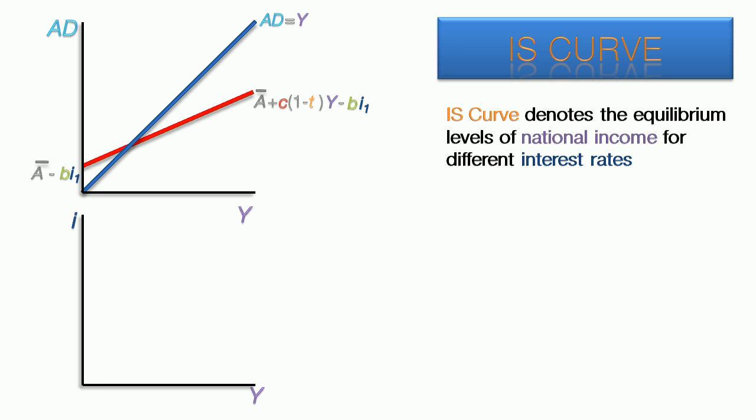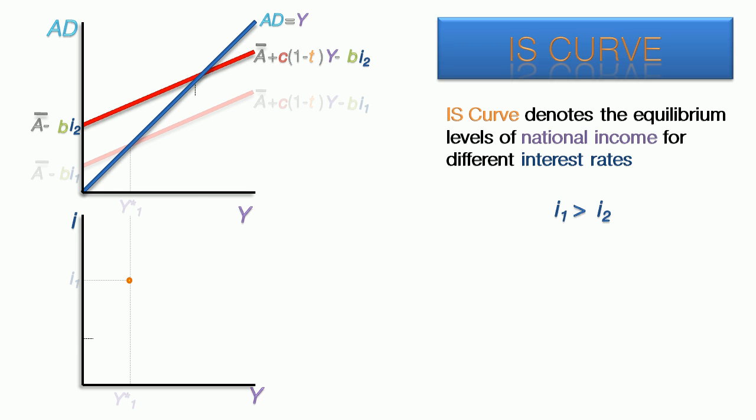Here is the curve for interest rate number 1. The equilibrium level of income is the same for both graphs. When we put interest rate number 1 on our bottom graph, we have the first point in our IS curve. The second aggregate demand curve has a lower interest rate, so it's parallel and higher up. On the lower graph, the intersection of interest rate number 2 and equilibrium income number 2 produce the second point in the IS curve. This could be repeated for every different interest rate in this range to produce the IS curve.